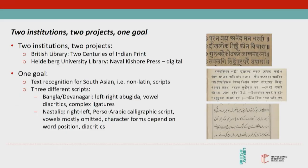Tom is digital curator for the Two Centuries of Indian Print project at the British Library and deals with 19th century printed books in Bangla script and language. He's also working with printed material in Urdu language, written in the Persia-Arabic calligraphic script Nastalik. My project, Nawalkisho Press Digital at Heidelberg University Library, also deals with 19th century printed books but focuses on the Devanagari script, which is used for various South Asian languages.